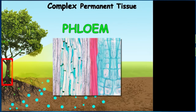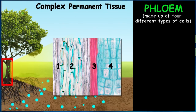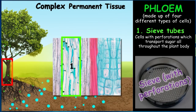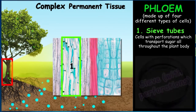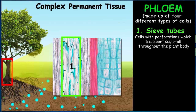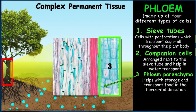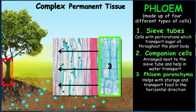Since phloem is also a complex tissue, it is made up of four different types of cells. The first and most important are sieve tubes, which are attached end to end. The name 'sieve' suggests perforations, and through these perforations, sugars are transported throughout the plant body. Alongside them are the second type — companion cells — arranged next to the sieve tubes to aid in the same function. The third type is phloem parenchyma, which stores food and also transports it in the horizontal direction — i.e., lateral transport — to neighbouring cells.